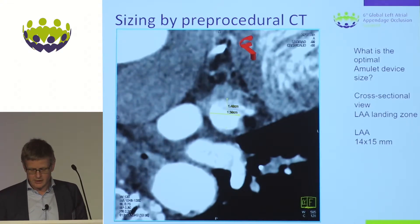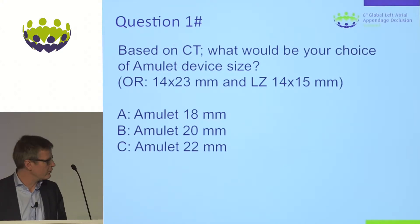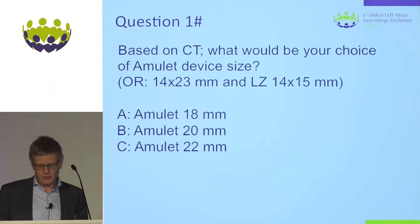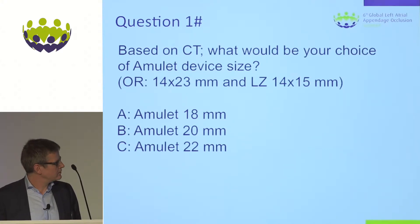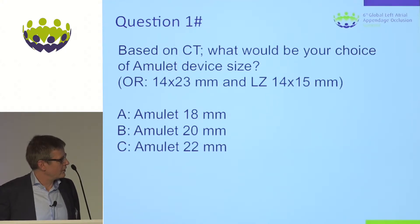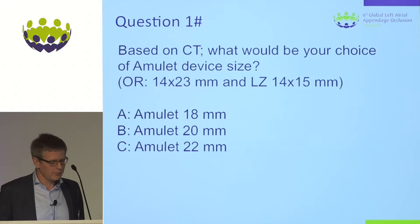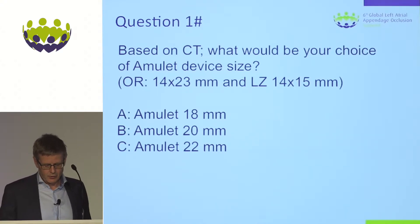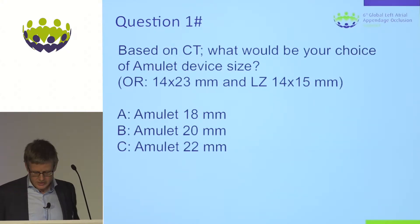Given an orifice maximal diameter of 23 mm and a landing zone maximal diameter of 15 mm, which size of Amulet device would you choose: 18, 20, or 22? The majority voted for 20 mm, and that would also be my choice. For smaller Amulet devices we tend to oversize by 5 to 6 mm; for larger devices we can go down to 3 mm because we have more volume in the lobe. The disc of a 20 mm device is 26 mm, so it definitely covers the 23 mm orifice.